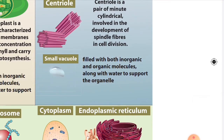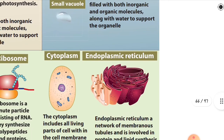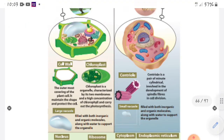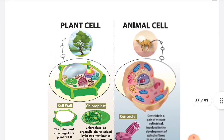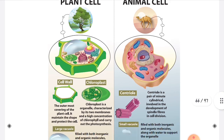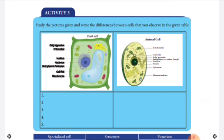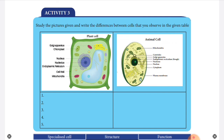The small vacuole in animal cells is filled with both inorganic and organic molecules along with water to support the organelles. This completes our comparison of plant and animal cells. Today's class is over; next class I will give you the plant and animal cell comparison. See the next page — Activity Three: plant and animal cell comparison.